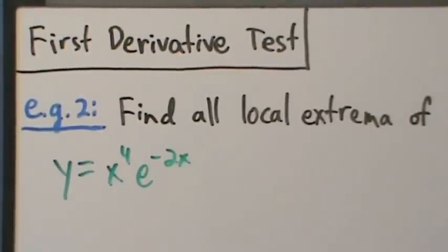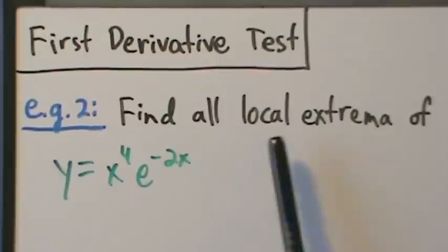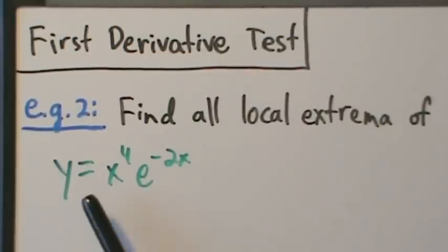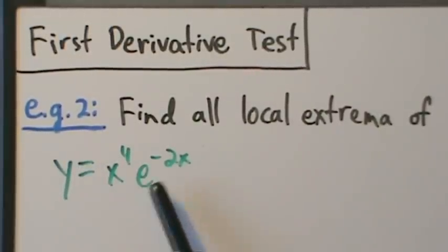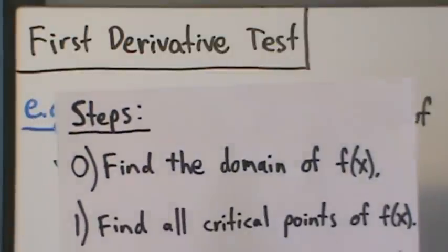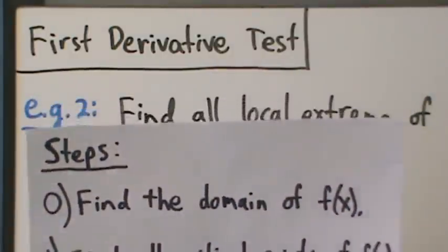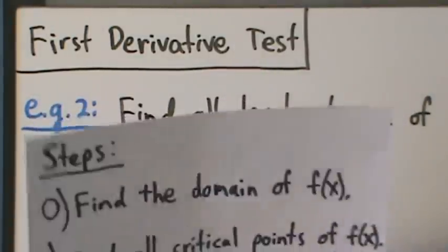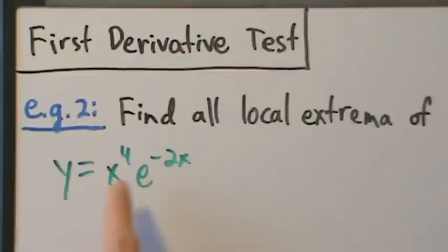Here's example two with the first derivative test. We're going to find all the local extrema of the function y equals x to the fourth times e to the negative 2x. In the last video when we talked about the first derivative test and did an example, we had four steps. We should also have a step 0, which is to find the domain of f of x, the original function.